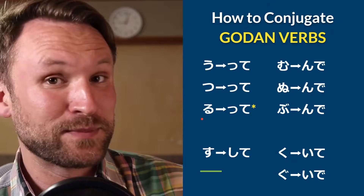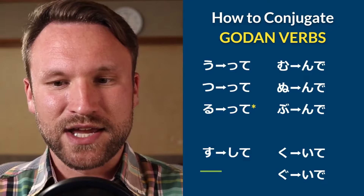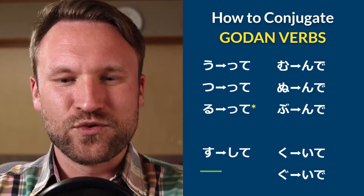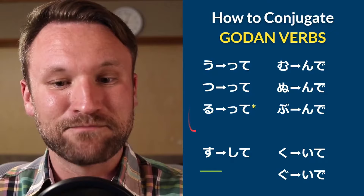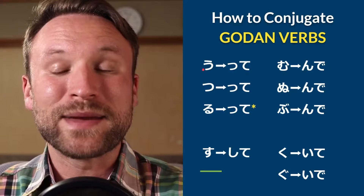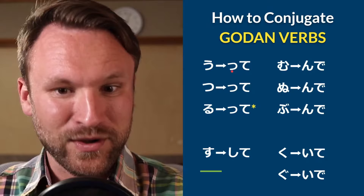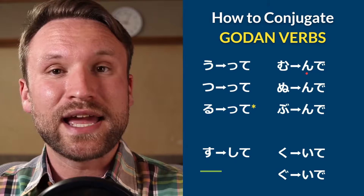With the masu form there was a simple rule — change the u to an i, tsu to chi. Unfortunately, there's no single rule for the te-form; there are four different endings to memorize. The good news is that depending on the dictionary-form ending, the te-form ending is always the same. U, tsu, and ru → small tsu + te (tte). Mu, nu, and bu → nde. Su → shite. Ku → ite. Gu → ide. You just have to memorize those groupings.